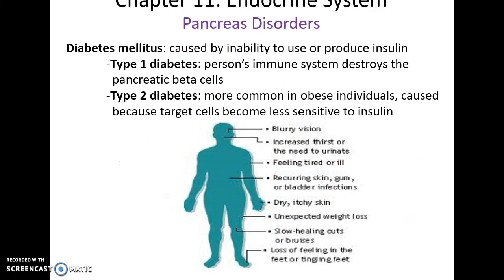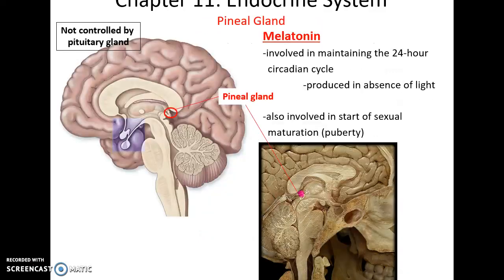Diabetes is caused by not producing enough insulin. In Type 1 diabetes, the person's immune system destroys the cells that produce insulin. In Type 2 diabetes, the body just stops responding to insulin, so it increasingly produces more and more insulin until eventually it can't produce enough to achieve the desired response.